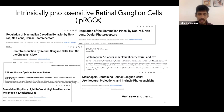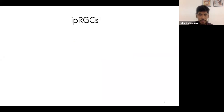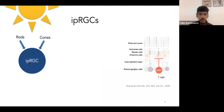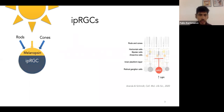In 2002, there was the discovery of retinal ganglion cells that are intrinsically photosensitive — these are the IPRGCs. IPRGCs, like any other ganglion cells, receive inputs from rods and cones through intermediate retinal cells. But they are unique in that they express a photopigment called melanopsin.